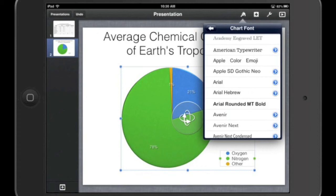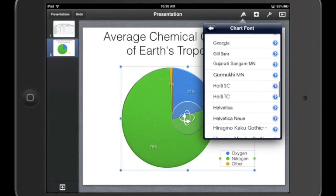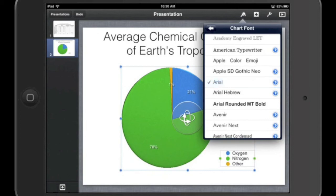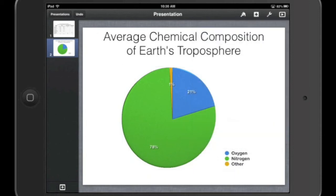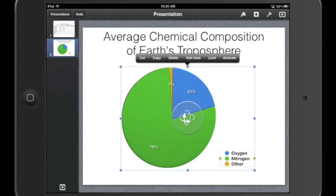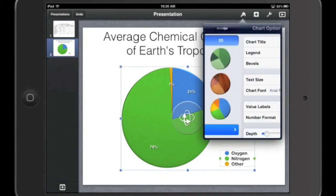I'm going to actually go ahead and pick a different font, something a little... Well, I can stick with Arial or Helvetica, but I want something a little bolder. So I'm going to choose Arial Rounded. It's a little bit bolder. Okay, and back to the Chart Options.